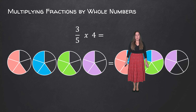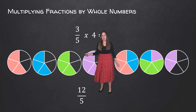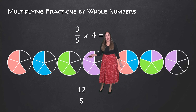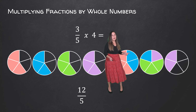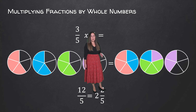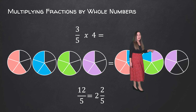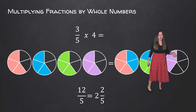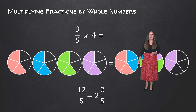So 3 fifths times 4 gives us a total of 12 parts shaded, out of 5, because each circle is out of 5 parts. Once we start combining it, we have two fully shaded circles — 1, 2 — and then 2 out of 5. So our answer is 12 out of 5, which is equal to 2 and 2 out of 5.